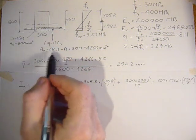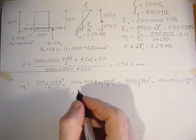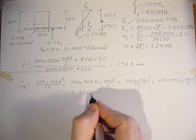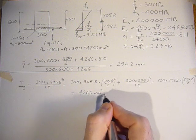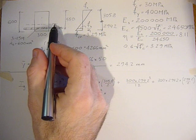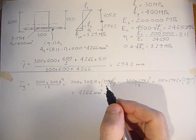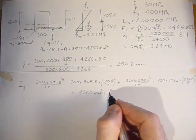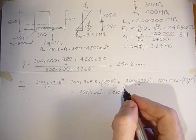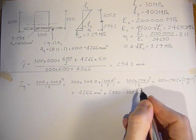plus its corresponding AD squared component: 300 times 294.2 times 294.2 over 2 squared, plus the AD squared component of the transformed steel area. The steel area is 4266 square millimeters times its distance from the neutral axis to its centroid, which is 550 minus 305.8, squared.